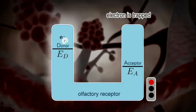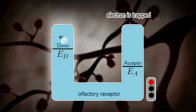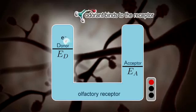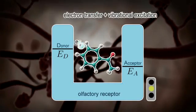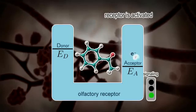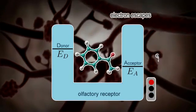This transfer is hardly possible without the presence of an external molecule because of the energetics of the receptor. But once an odorant molecule is bound with a receptor, it vibrates at certain characteristic frequencies, and this vibration assists the electron tunneling from the donor to the acceptor.